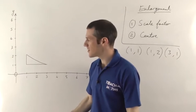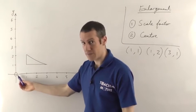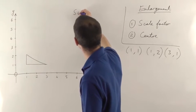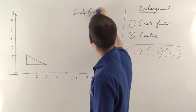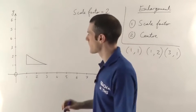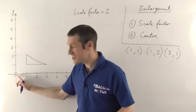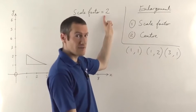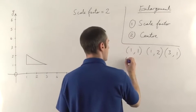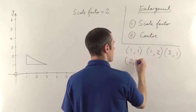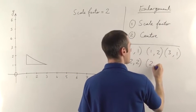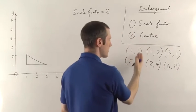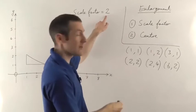If the centre of enlargement is the origin, then whatever the scale factor is — let's imagine we have a scale factor of 2 — you just multiply all of your coordinates by the scale factor. So instead of (1,1) you get (2,2); (1,2) would become (2,4); and (3,1) would become (6,2). Each of the numbers have just become twice as big because the scale factor is 2.